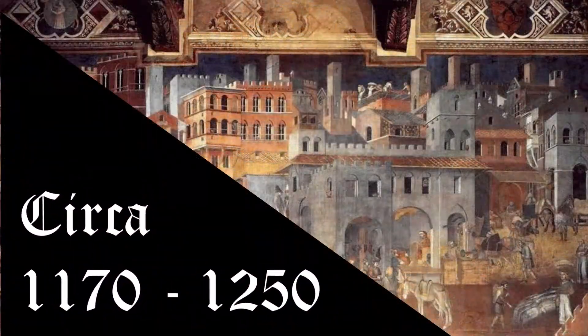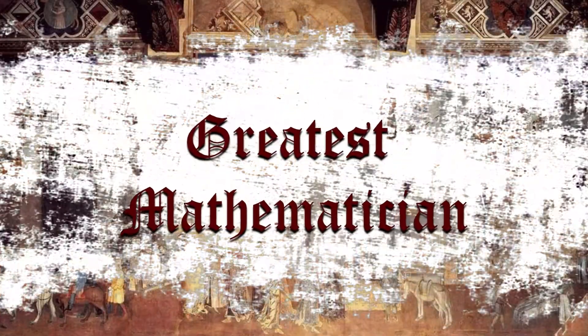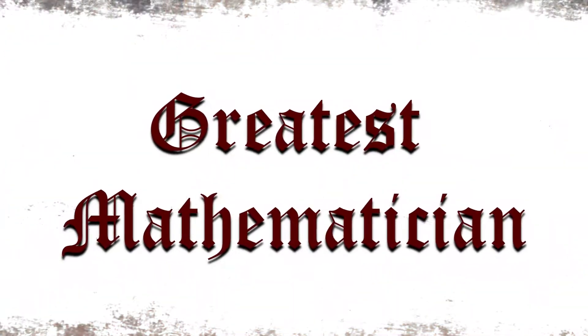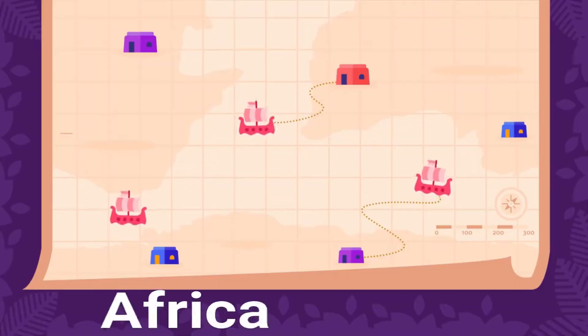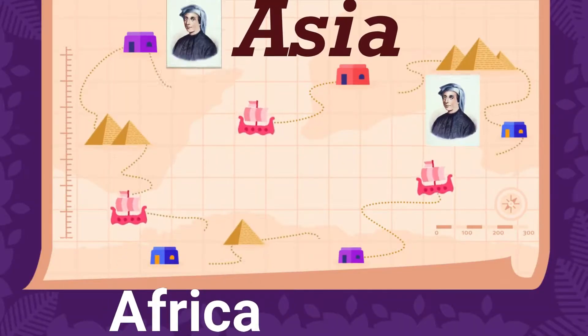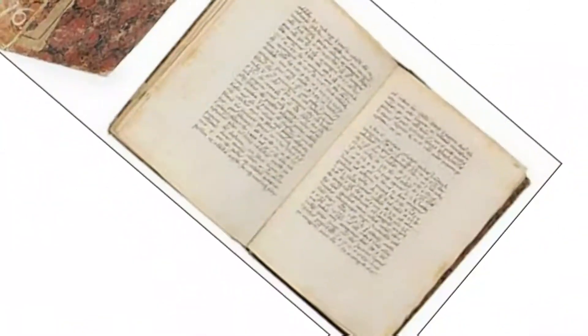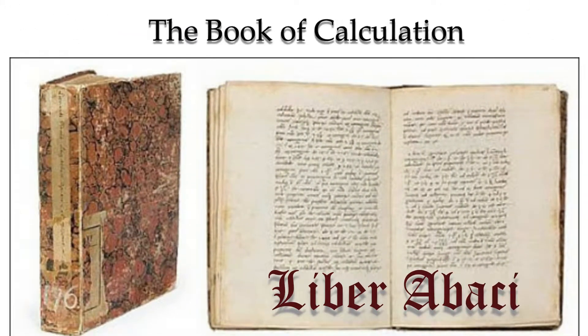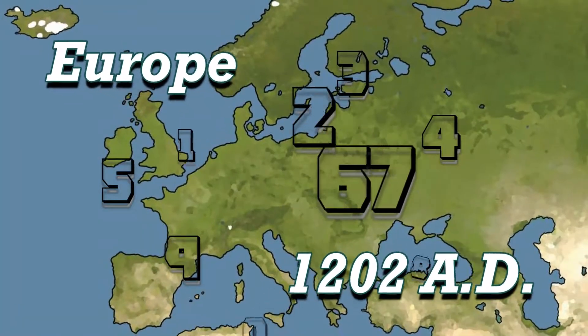He existed around 1170 to 1250 and is said to be the greatest European mathematician of the Middle Ages. He traveled in Africa and some parts of Asia where he met different mathematicians. His famous book Liber Abaci, or the Book of Calculation, introduced the concept of Hindu-Arabic numerals to Europe in 1202.